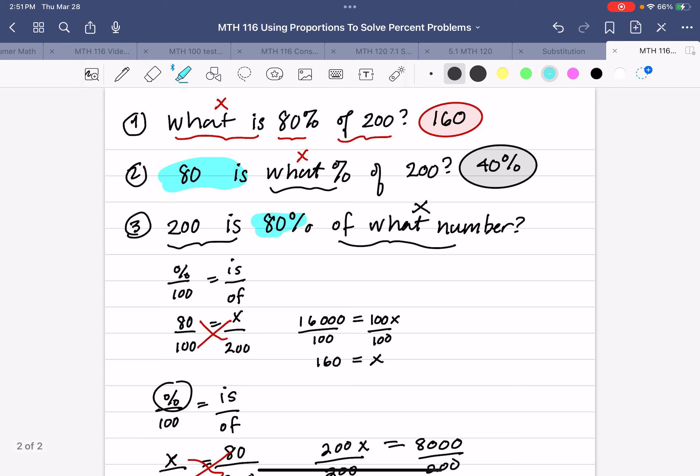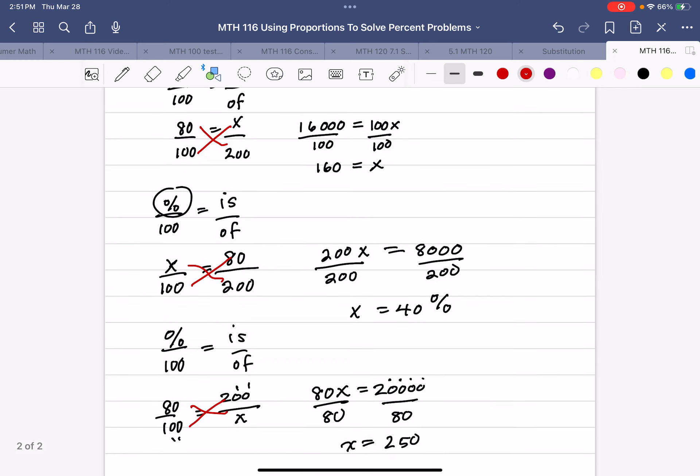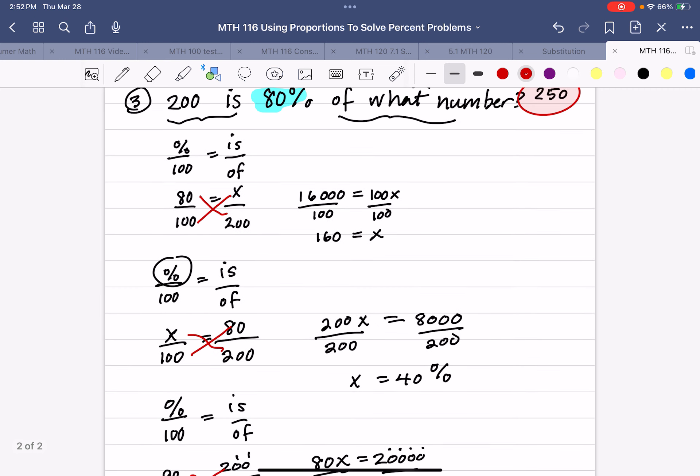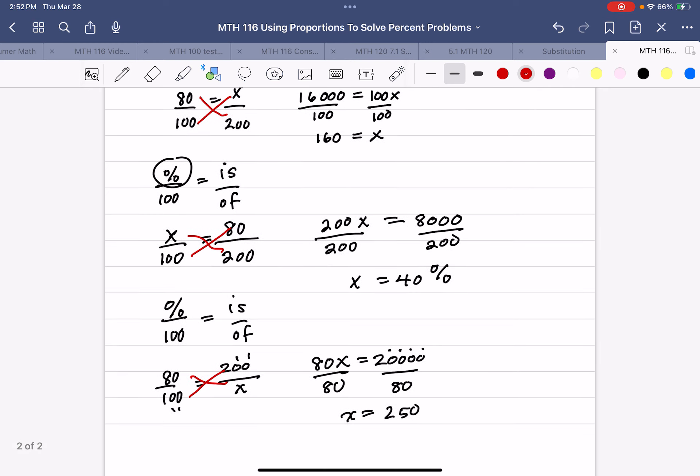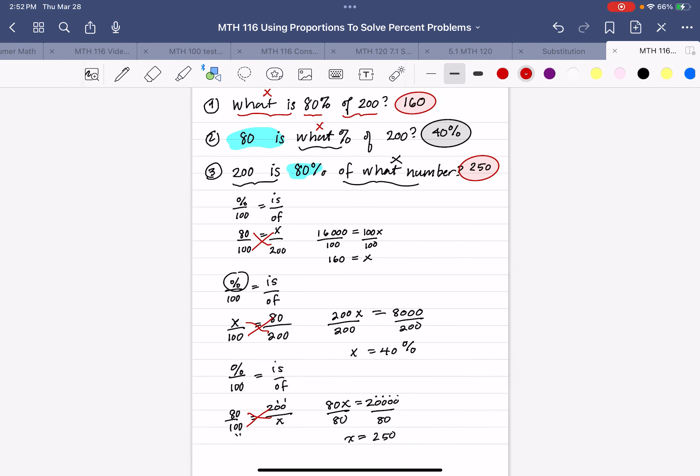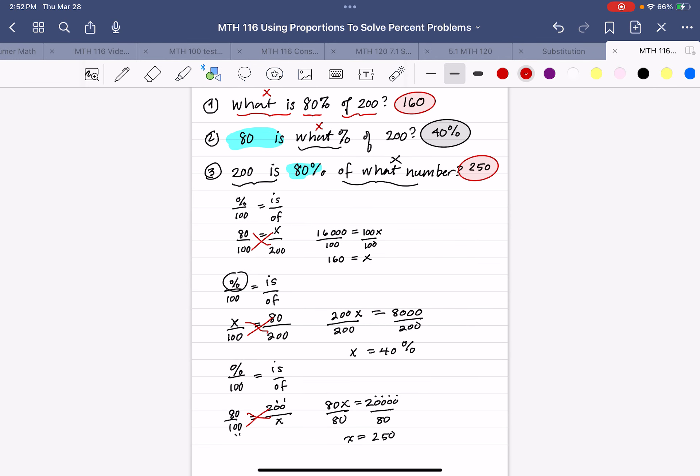So, once again, we get the correct answer using a different method. But, look at these methods. In every case, I cross-multiplied and divided. I cross-multiplied and divided. I cross-multiplied and divided. So, this may help you to simplify how to solve percent problems.